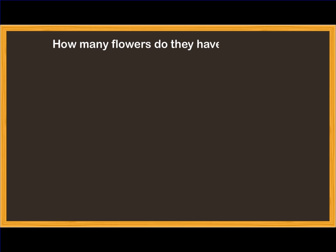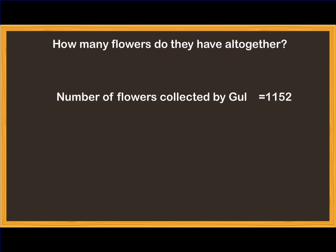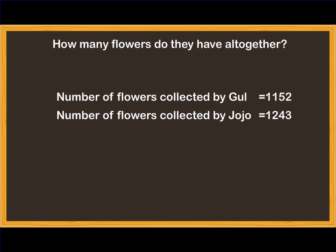Now they have enough flowers to make a nice big garland for Thad. How many flowers do they have altogether? We know the number of flowers Gull collected is 1152, Jojo collected is 1243, and the number of flowers collected by Crow is 957.